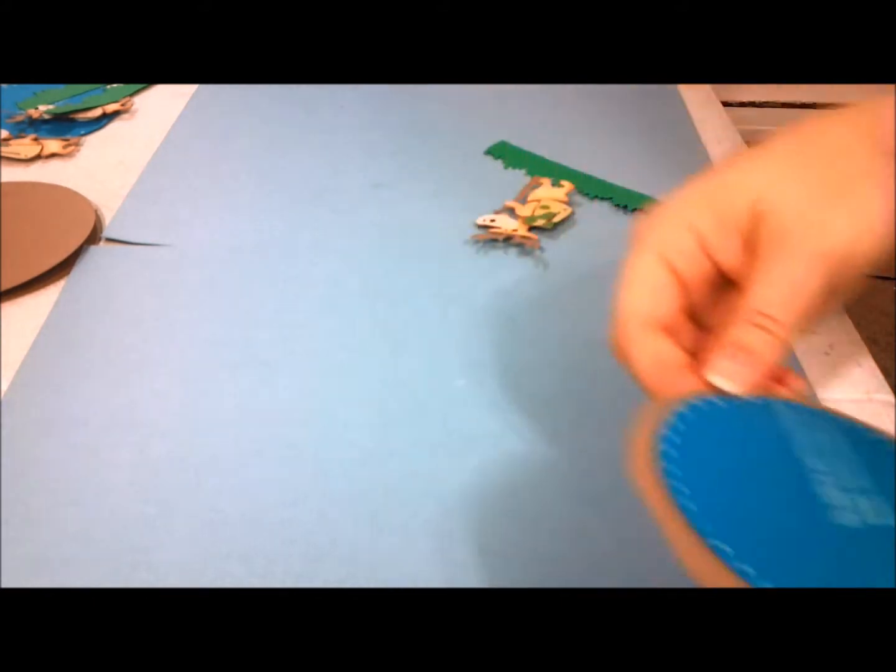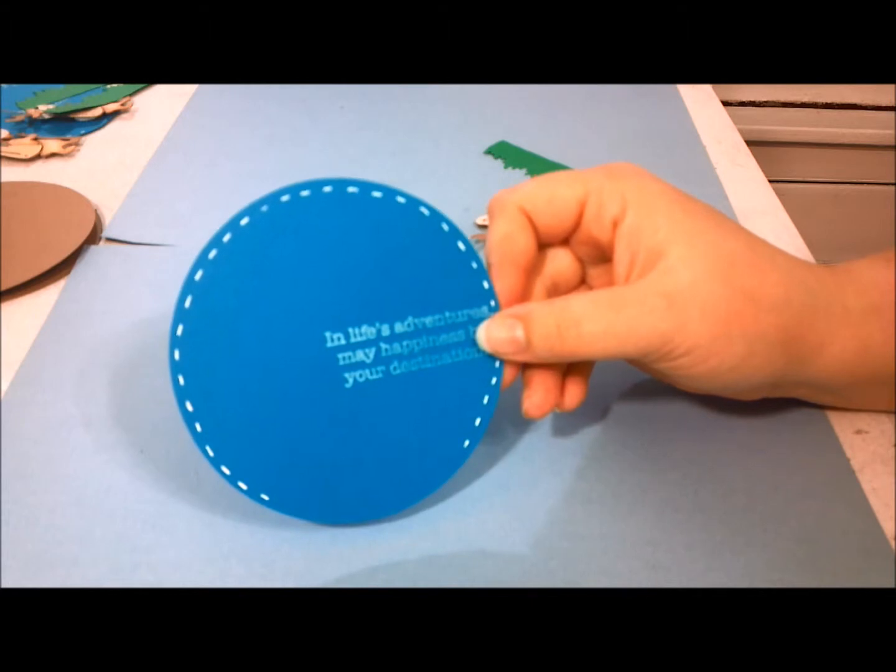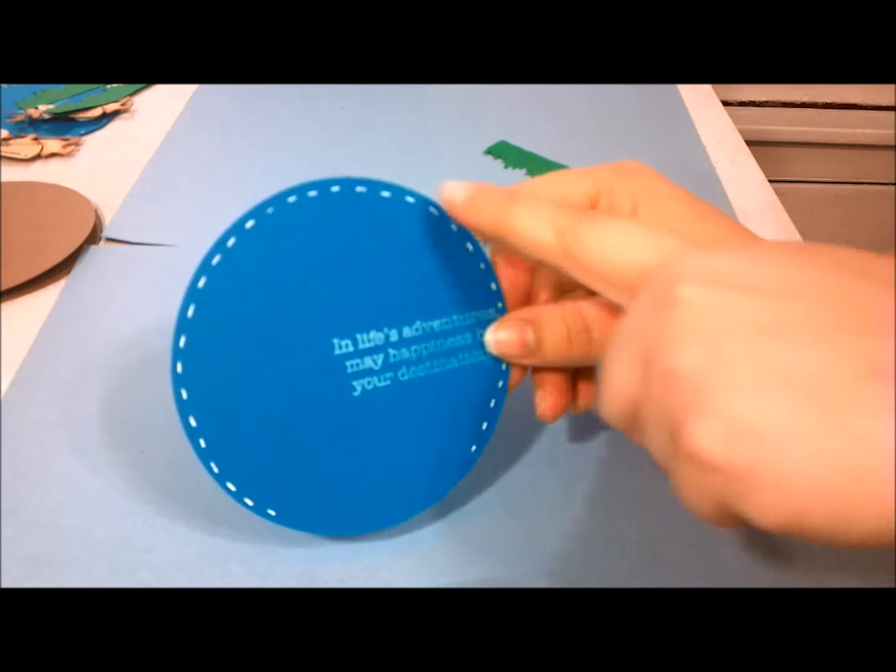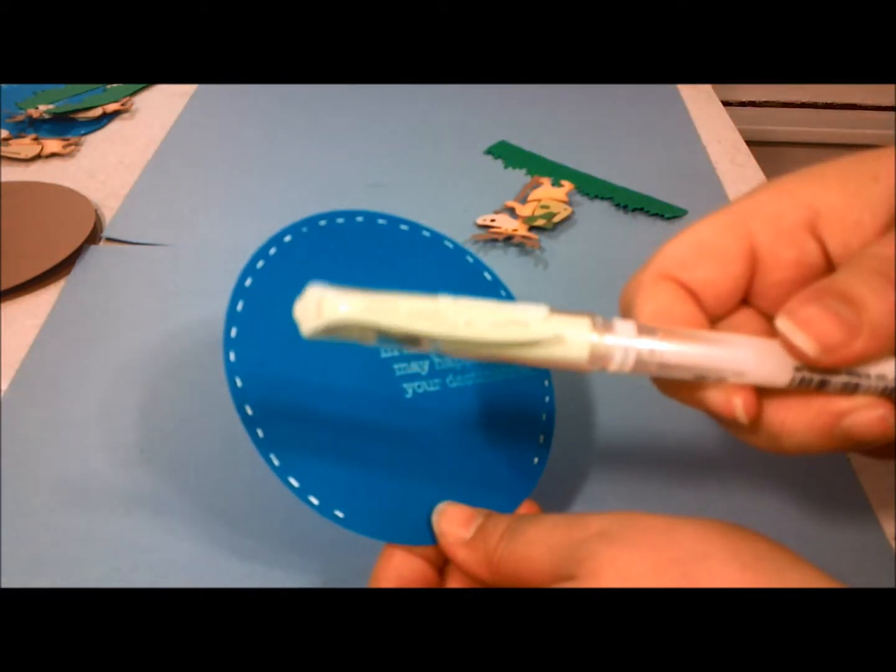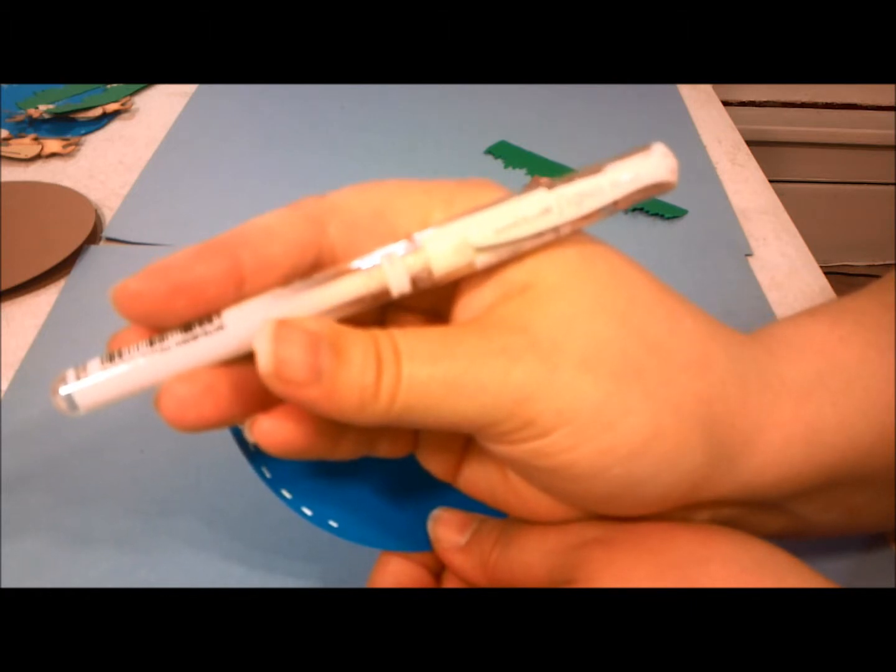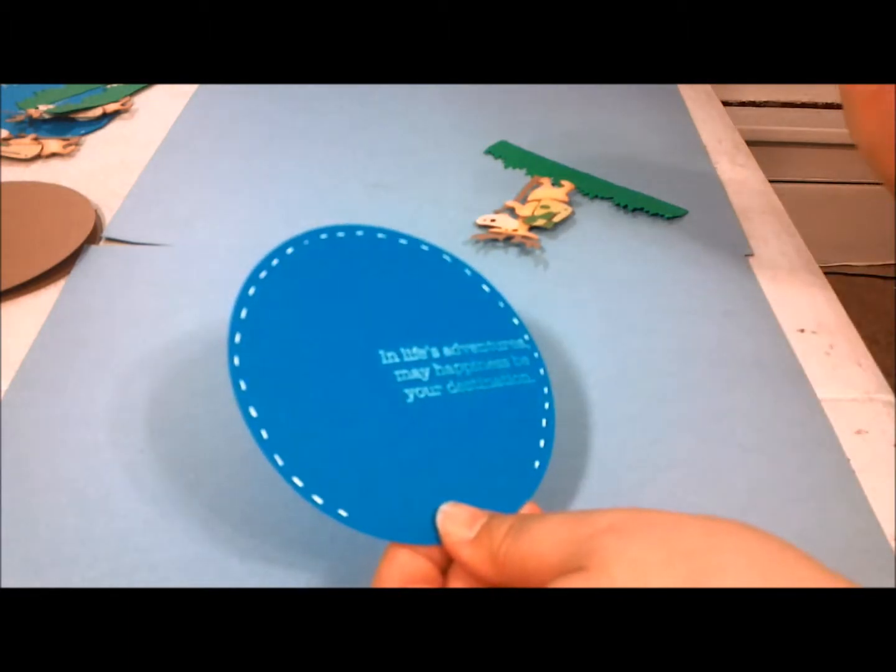So we'll get started. First off you're going to take your circle, your mat, and I went around it with a white gel pen. I used this Uni-Ball kind of gel pen. I got this at Archivers. It works awesome. It's the best one I've found.